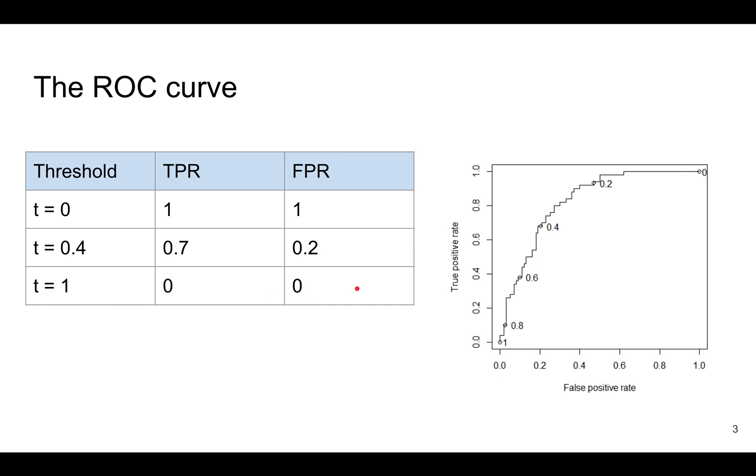And as you vary the threshold, for example, if the threshold is 0.4, the true positive rate is about 70%, and the false positive rate is about 20%. So that means we correctly capture or classify about 70% of the actual positives, but about 20% of the negatives, we will report them as positive, even though it's not true.